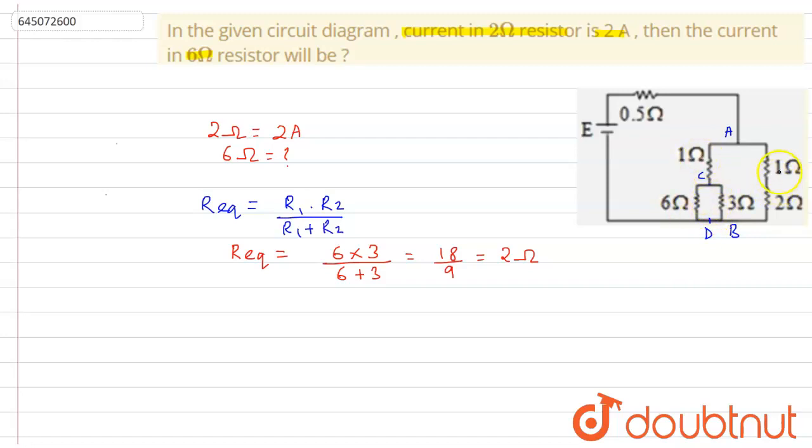So we see that the equivalent resistance is 2 ohm. And here it is 1 ohm. In the opposite branch, it is 1 ohm and 2 ohm. So these two branches have the same resistance.